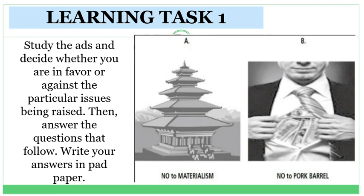For our Learning Task number one, as you can see, we have two different sets of pictures. Set A is all about no to materialism, and Set B is no to pork barrel. All you have to do is study the ads and decide whether you are in favor or against the particular issues being raised. Then answer the questions that follow.